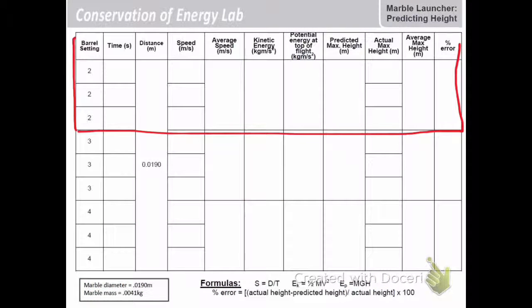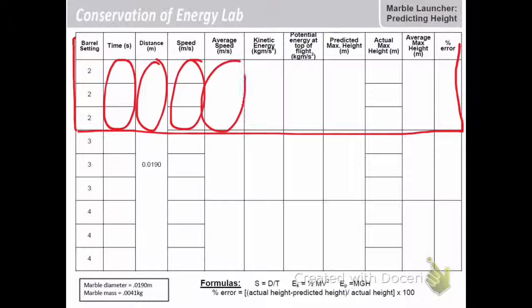So to summarize what you have to do in this lab for your calculations, you look at the times from your data. That's of the marble going horizontally through the photogate. The distance of the marble is its diameter. Distance divided by time tells you the speed. Average those three speeds and use that speed to calculate the kinetic energy of the marble as it leaves the barrel.